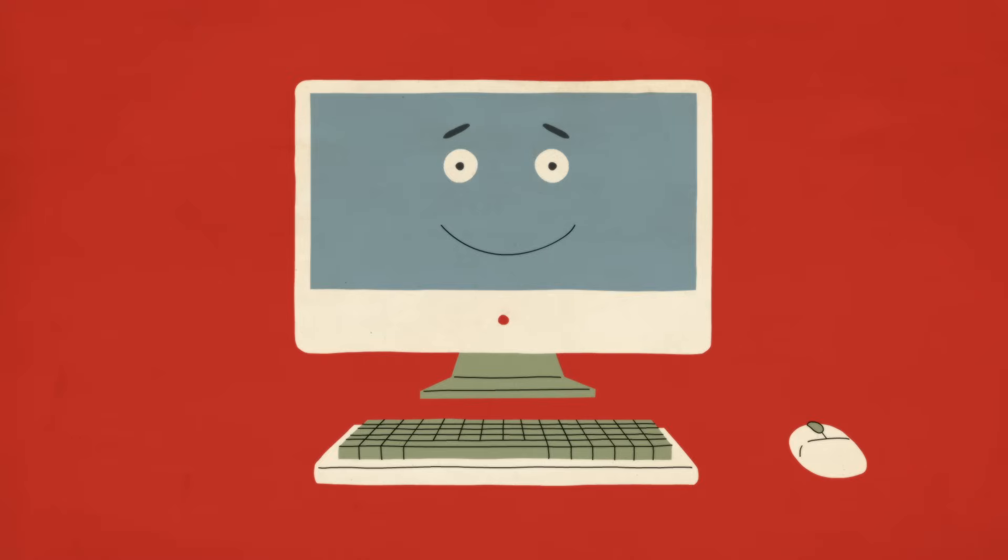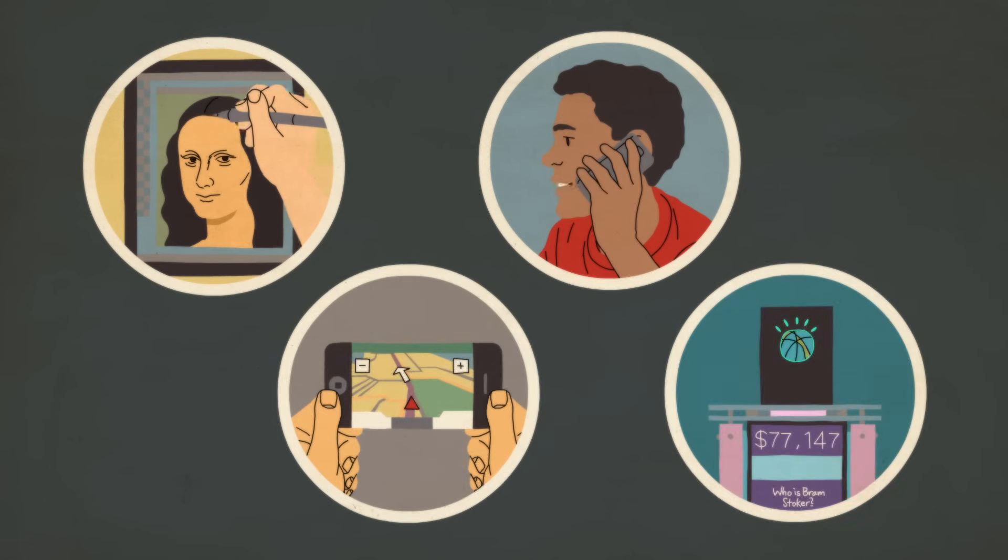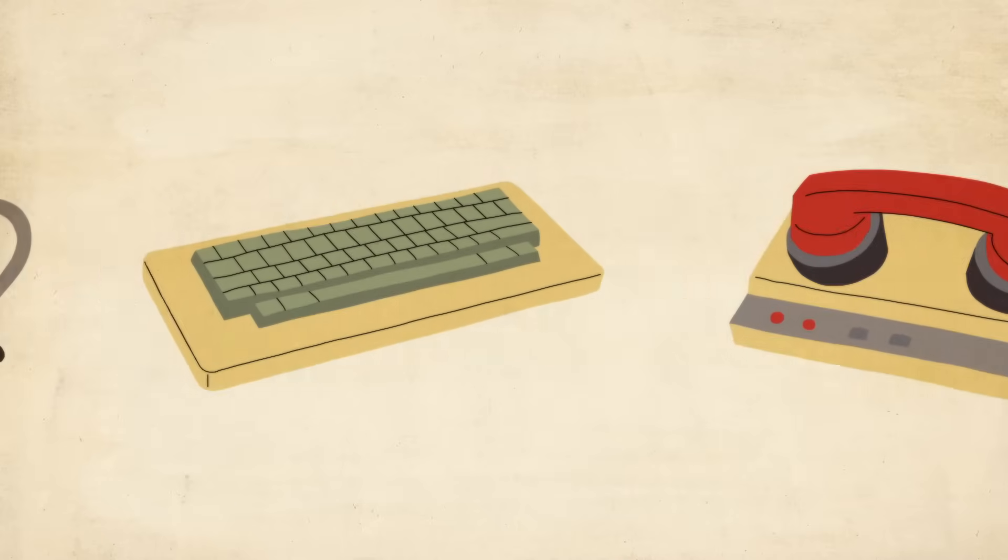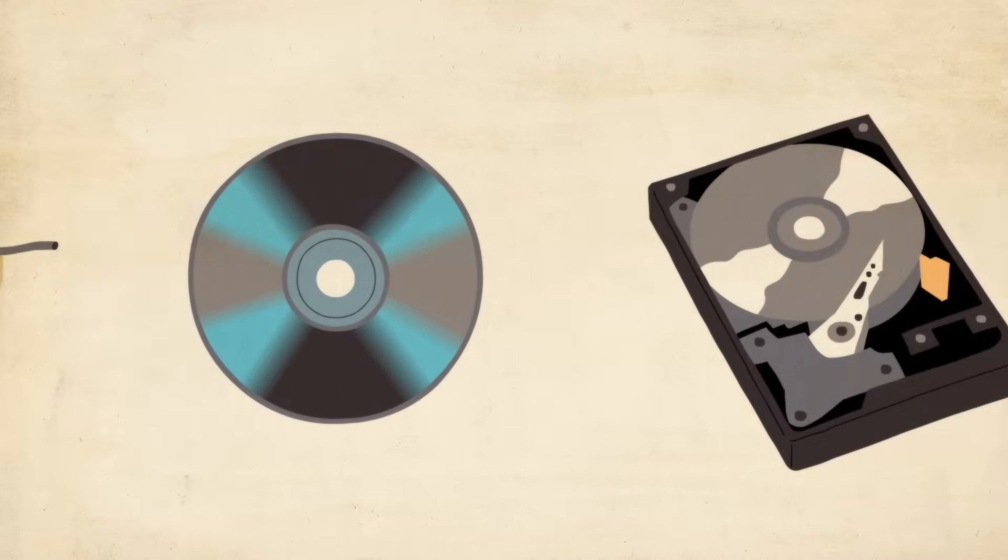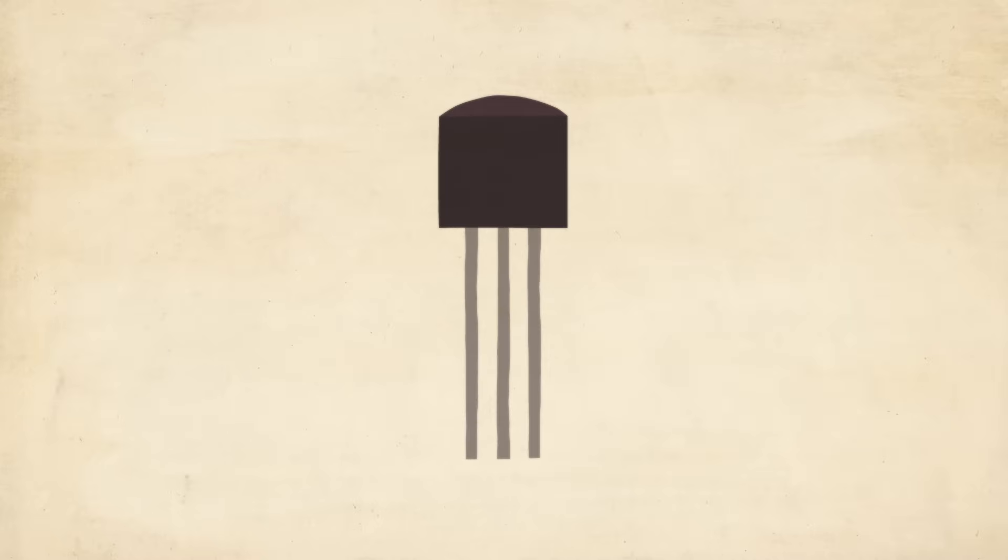Modern computers are revolutionizing our lives, performing tasks unimaginable only decades ago. This was made possible by a long series of innovations, but there's one foundational invention that almost everything else relies upon: the transistor.